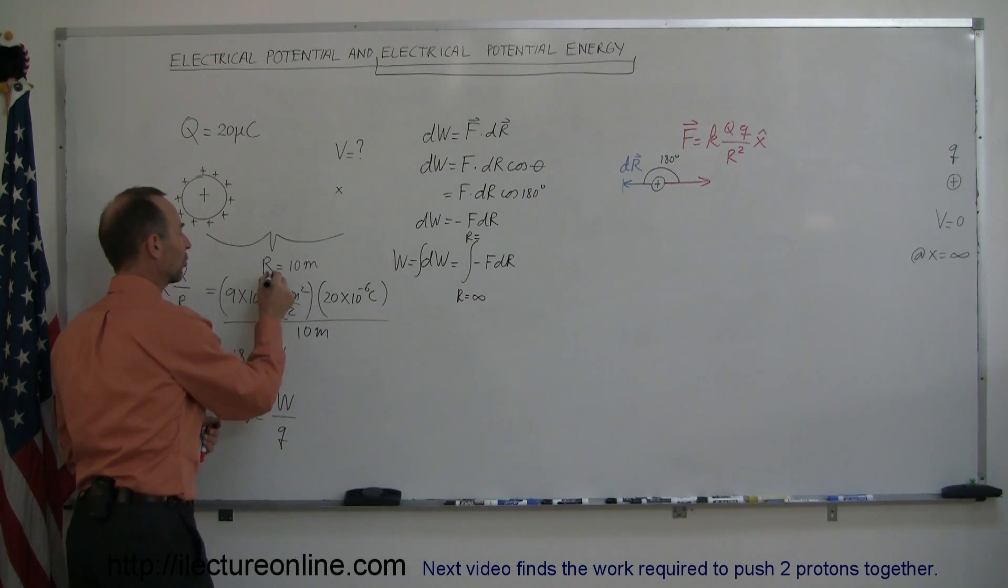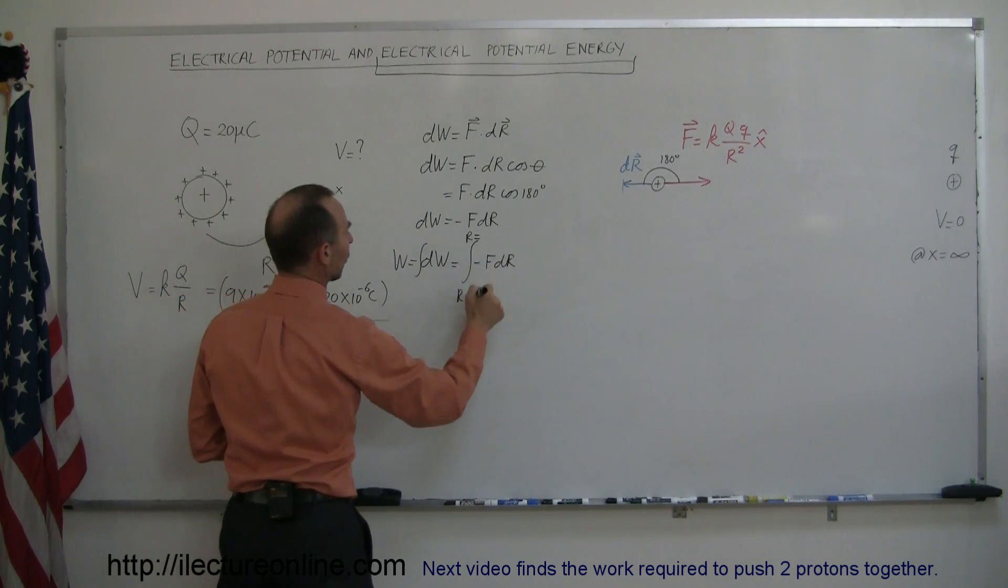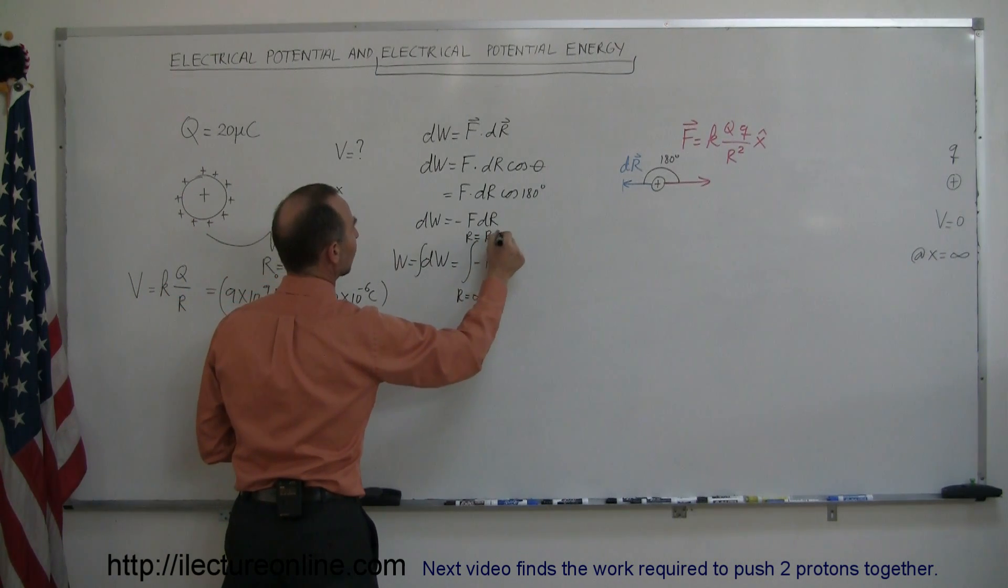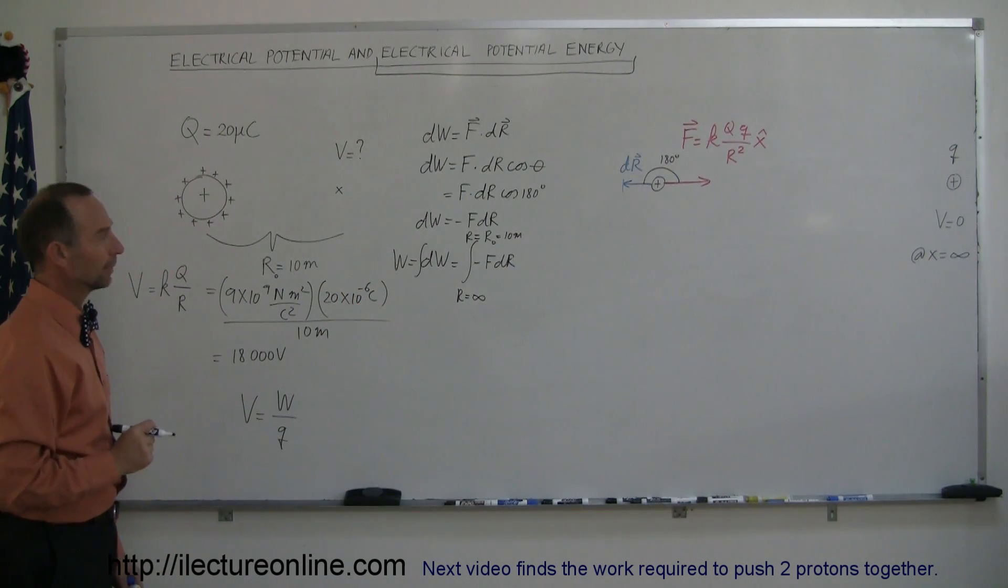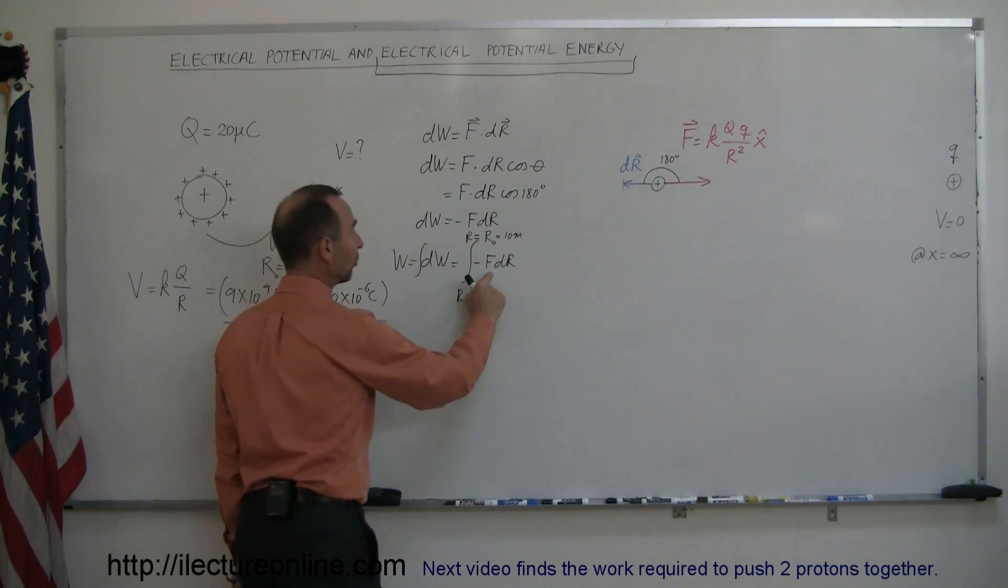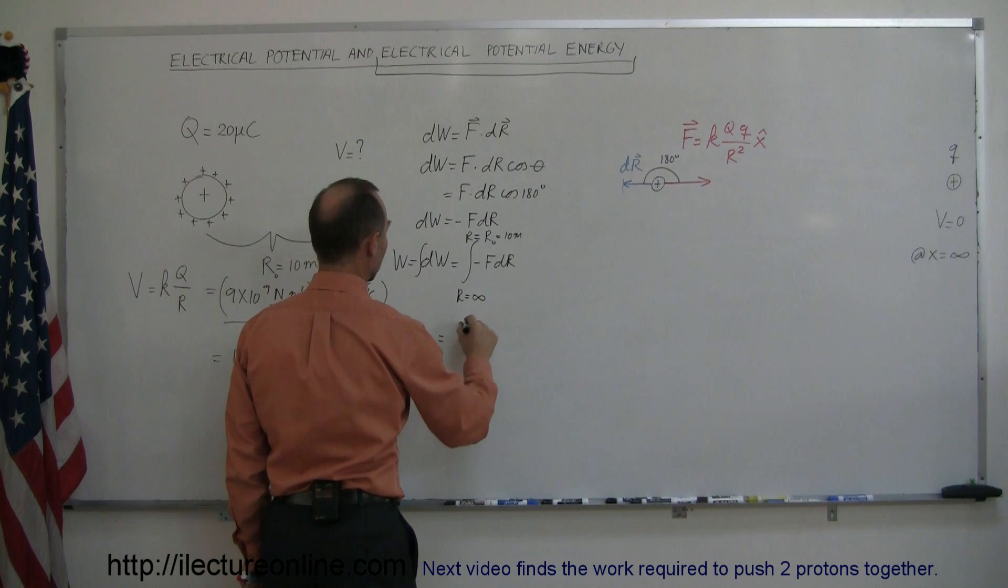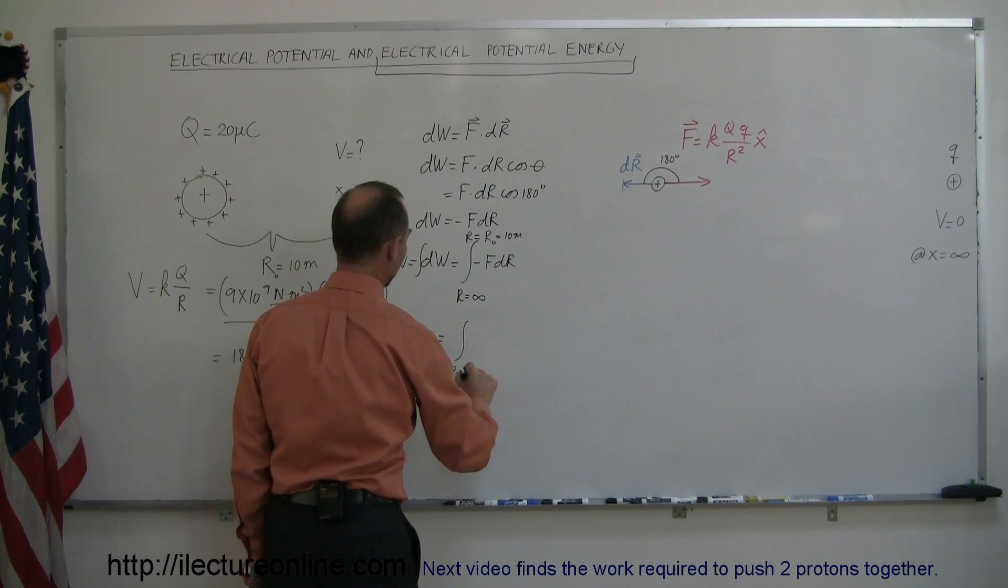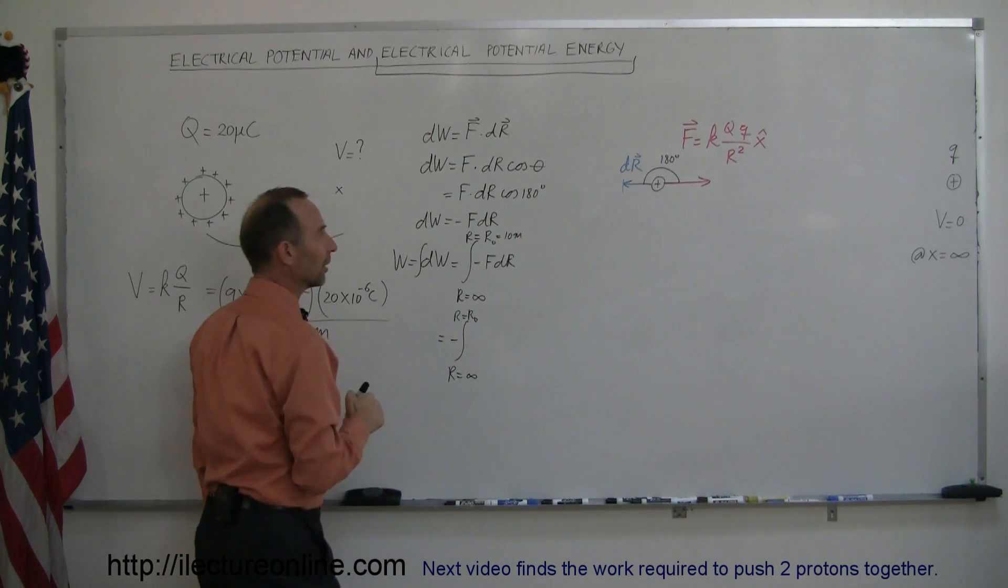Let's call it r sub-naught to make it look different from the r that we're dealing with, so r equals r sub-naught, which is equal to ten meters. How do we do that? First of all we're going to replace the force by what the force is equal to, so this is equal to the integral from r equals infinity to r equals r sub-naught of negative, we'll put the negative in front of the integral sign, k big Q little q over r squared dr.